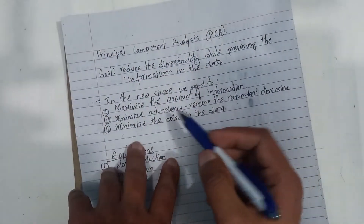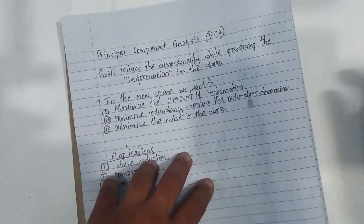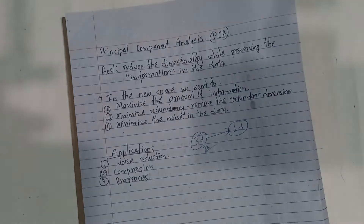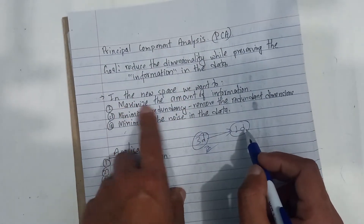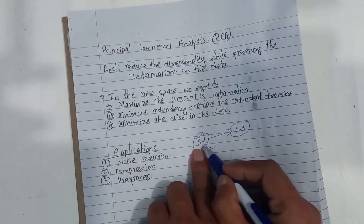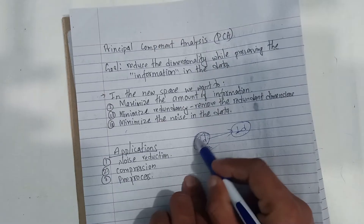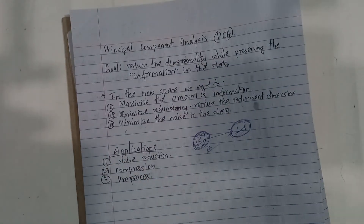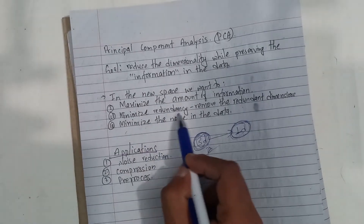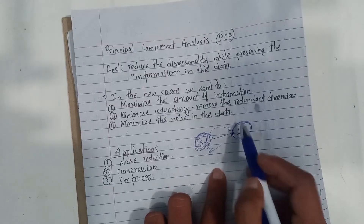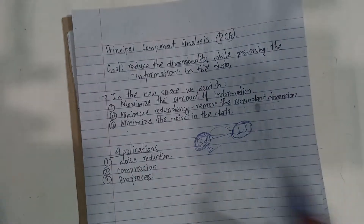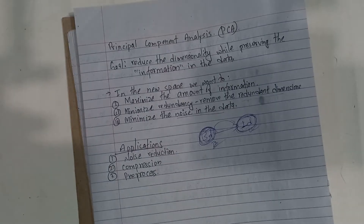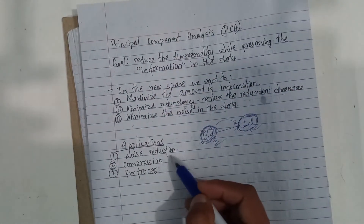In the new space, in the new dimension — let's suppose we have 3D data and we want to look at 1D data. We have to maximize the amount of information retained when going from 3D down to 1D. The amount of redundancy is removed, the noise in the data is minimized. PCA can be used for noise reduction and data compression.